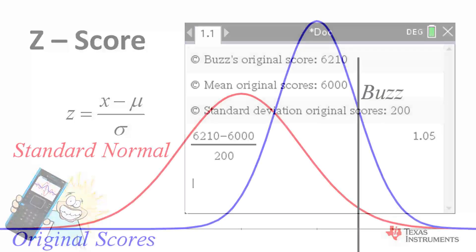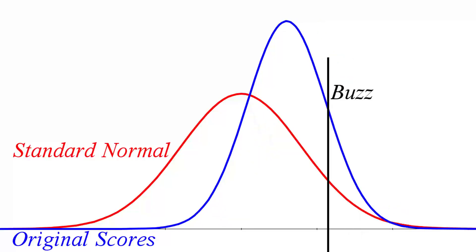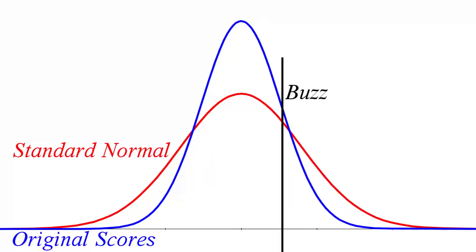In other words, Buzz's score, relative to all other high scores of his era, is at a little bit more than one standard deviation above the mean.